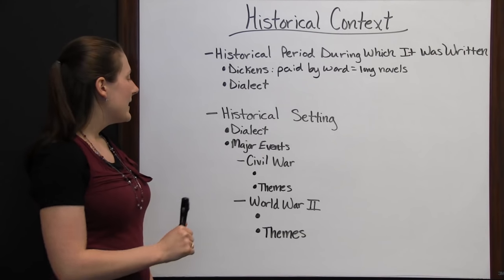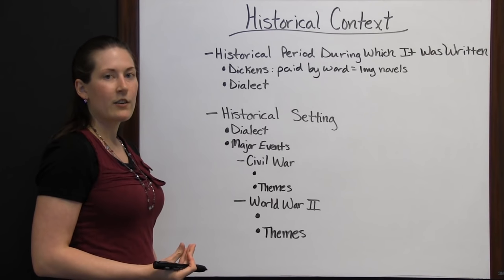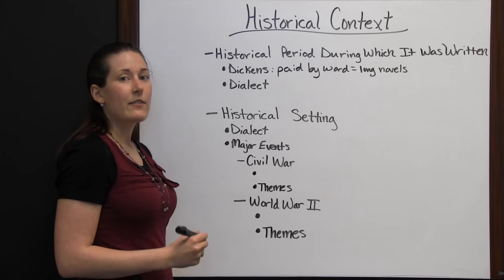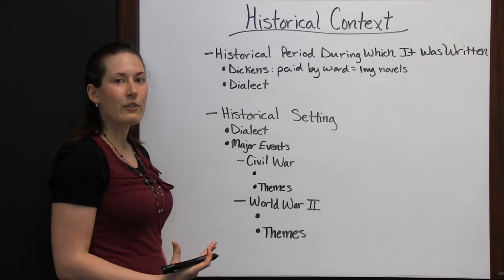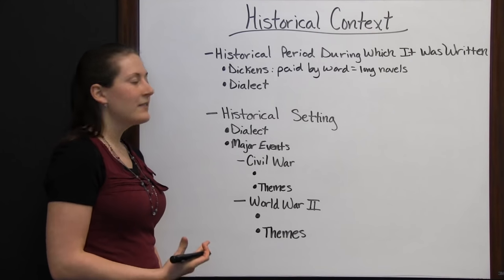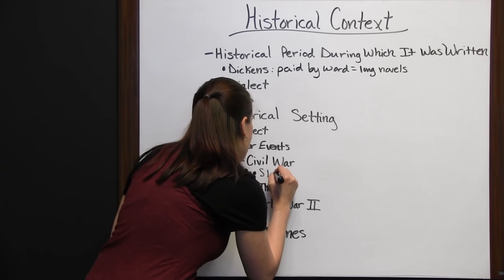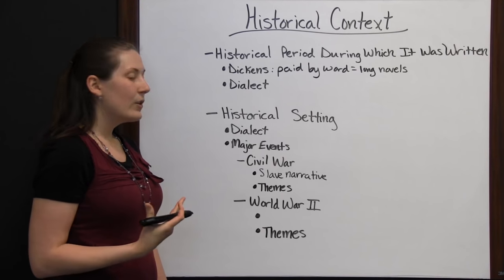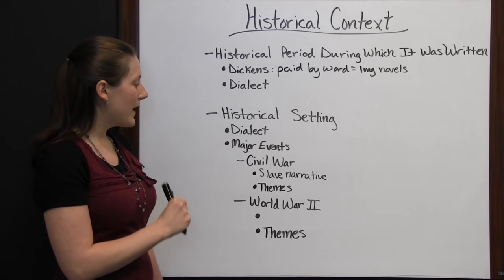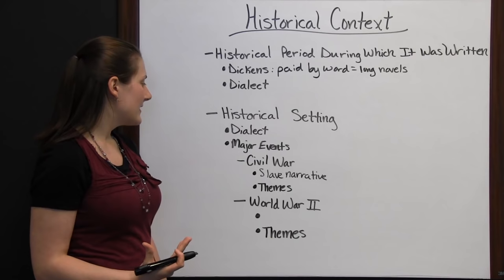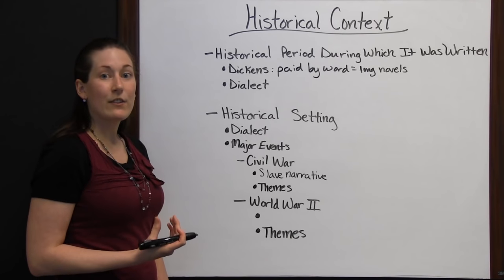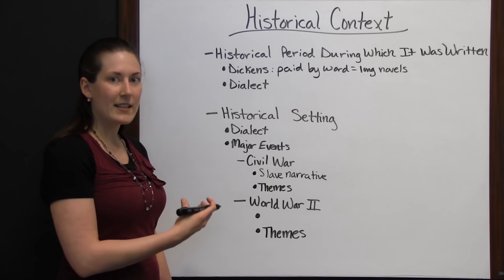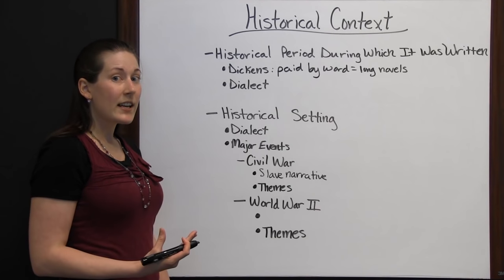Pay attention to major events going on in a historical setting. The Civil War is one example — during the Civil War, slavery was the norm in the South. After the war, many former slaves wanted to tell their story, and what came about were slave narratives. These painted a picture of what slave life was actually like during that time — a first-hand account of the period that also described the relationship between slaves and slaveholders. This source of writing has become one of the most important literary genres for African American writers.